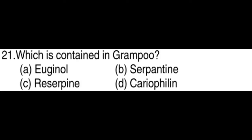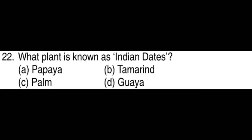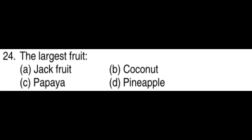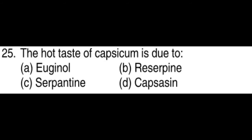Which is contained in bamboo? Hugonot. The plant known as Indian dates is tamarind. The plant known as poor man's wood is bamboo. The largest fruit is jackfruit. The hot taste of capsicum is due to capsaicin.